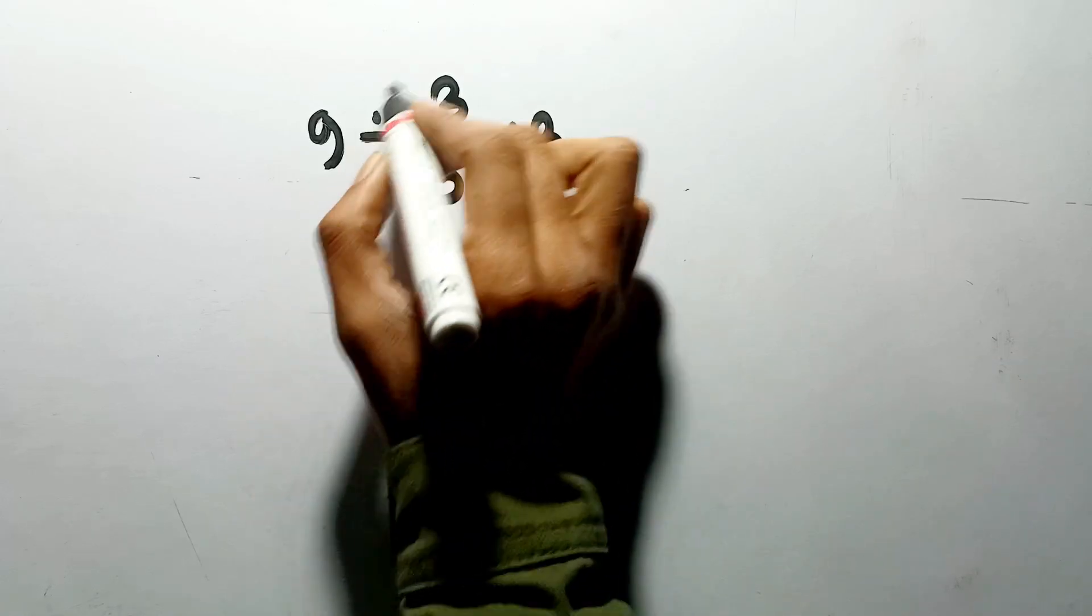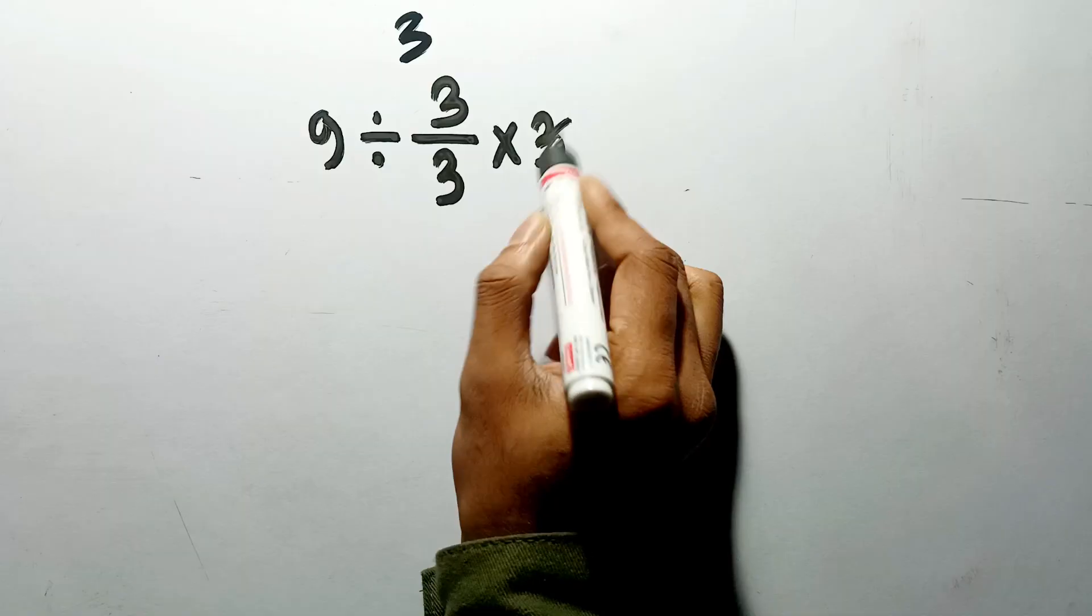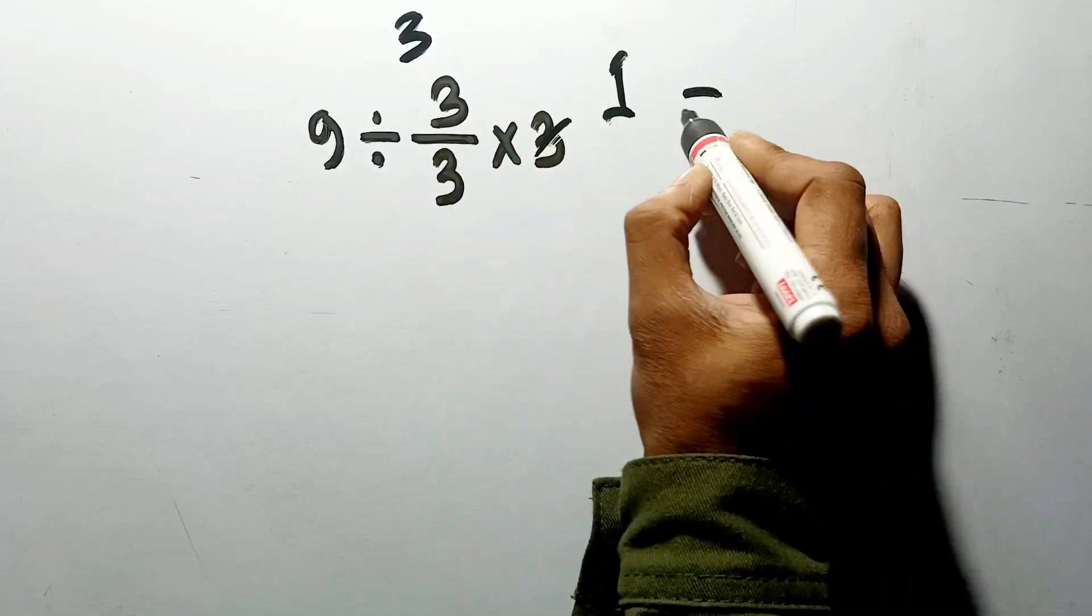9 divided by 3 gives us 3. And again here, we have 3 divided by 3, which gives us 1. So 3 times 1 gives us 3.